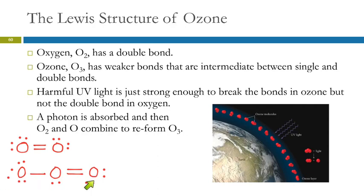So, this has a resonance structure. We could represent it as the oxygens having like one and a half bonds with each other. The bonds are equivalent. The bonds in ozone are weaker than the bonds in oxygen.